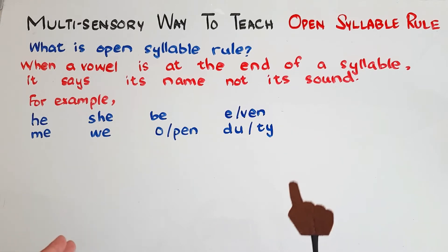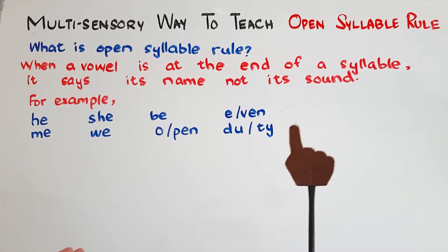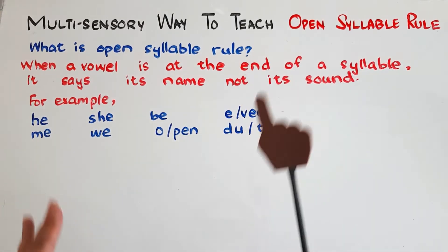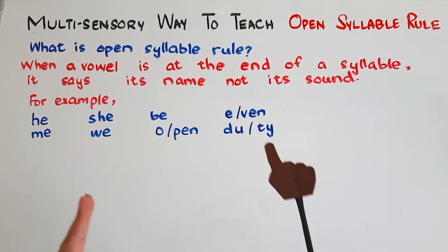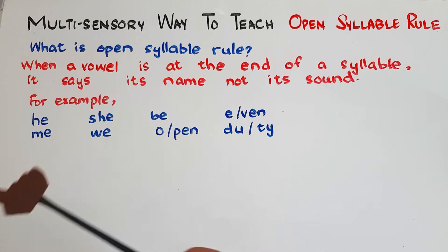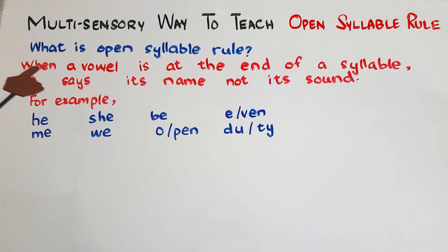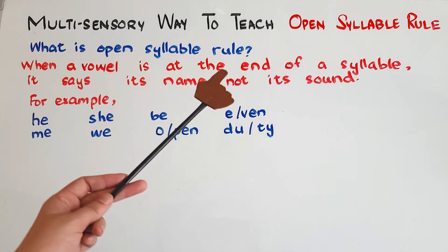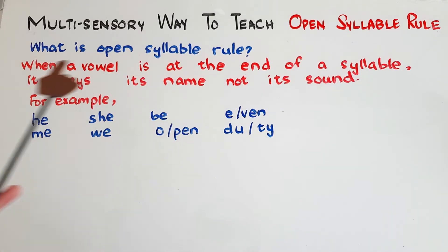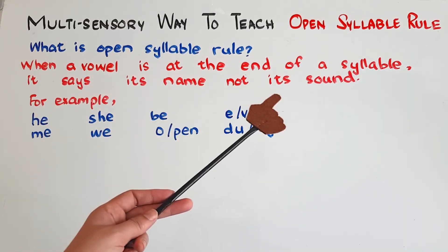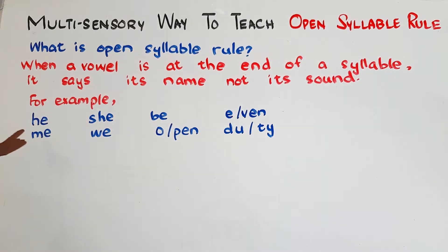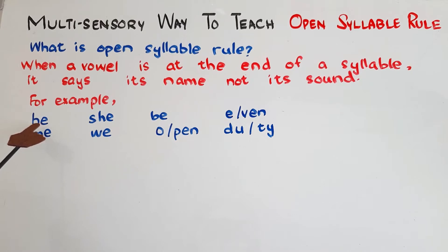If you don't know open syllable rules, let me tell you that this is such an important rule to teach children to make them fluent readers and good writers. What does this rule say? When a vowel is at the end of a syllable, it says its name, not its sound. For example, the word 'he' — we are not getting the sound of letter E, but its name.